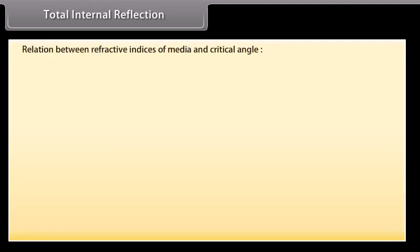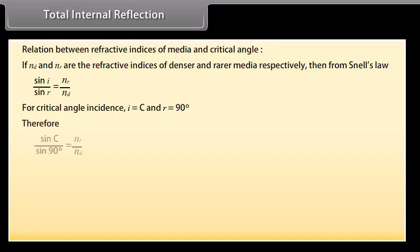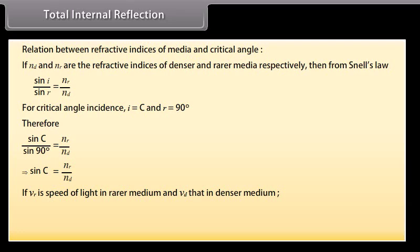Relation between refractive indices and critical angle: From Snell's Law, sin i / sin r = N_R / N_D. For critical angle, i = C and r = 90°, so sin C / sin 90° = N_R / N_D, which gives sin C = N_R / N_D. If V_R is the speed of light in the rarer medium and V_D that in the denser medium, then sin C = V_D / V_R.